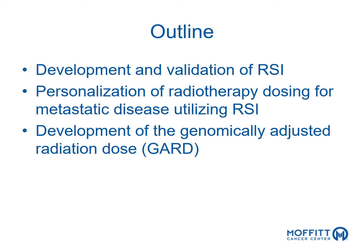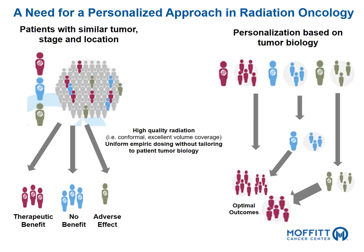There is certainly a need for a personalized approach in radiation oncology. As radiation oncologists we strive to deliver high quality conformal radiation therapy with excellent volume coverage, but largely this is uniform empiric dosing without tailoring radiation therapy dosing to patient tumor biology. Patients with a similar tumor stage and location are grouped into cohorts who either have therapeutic benefit, no benefit, or adverse effects. How can we personalize the delivery of radiation therapy based on tumor biology so that patients can be put into the cohort with optimal outcomes?